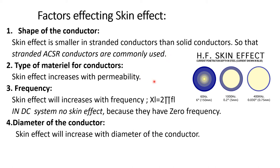The second factor is the type of material used for conductors. The material used must have less permeability. If permeability is very high, skin effect increases. Permeability is the ability of a material to become magnetized when AC passes through it.